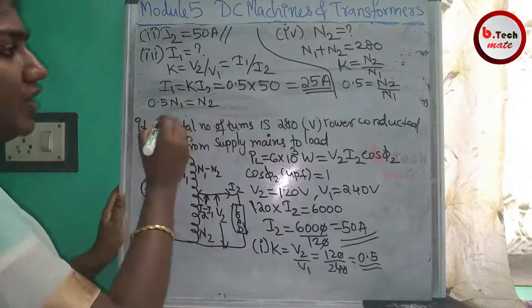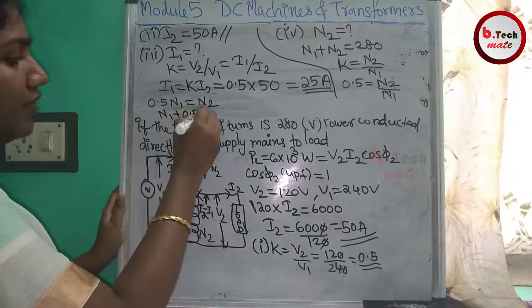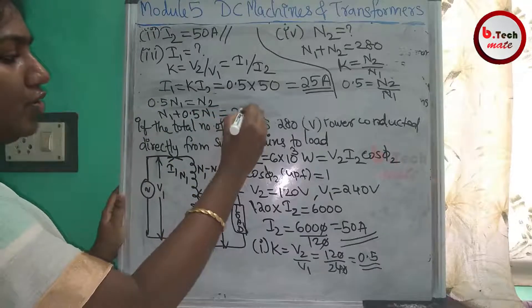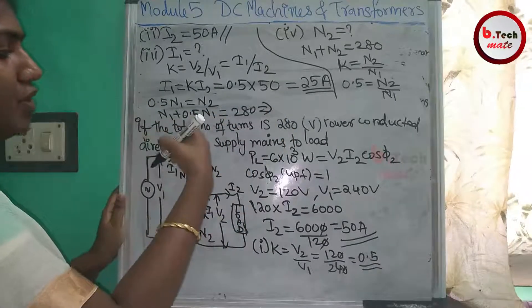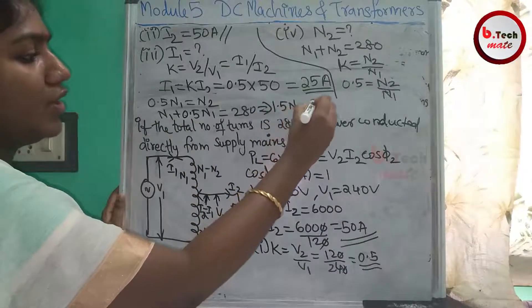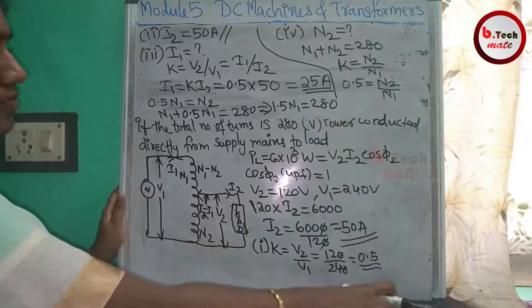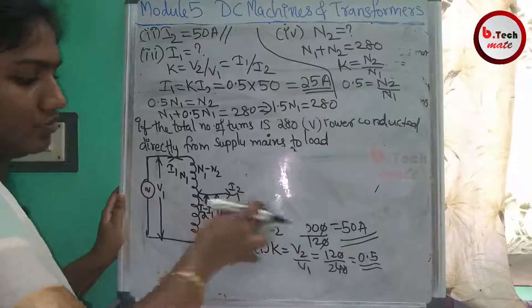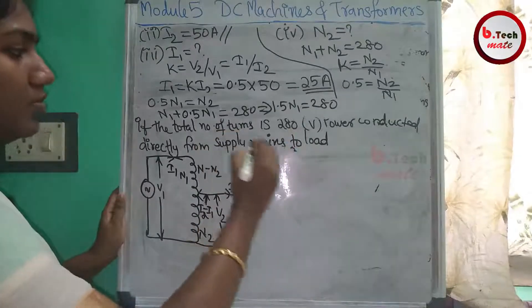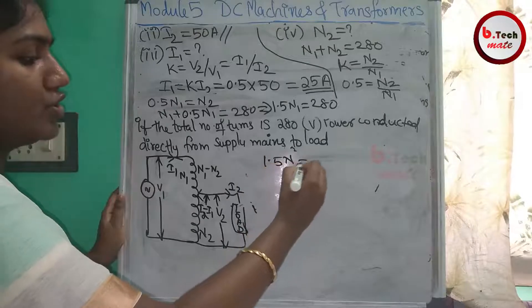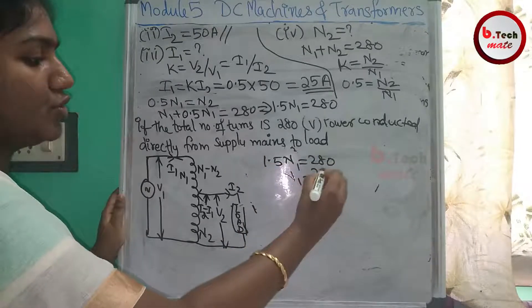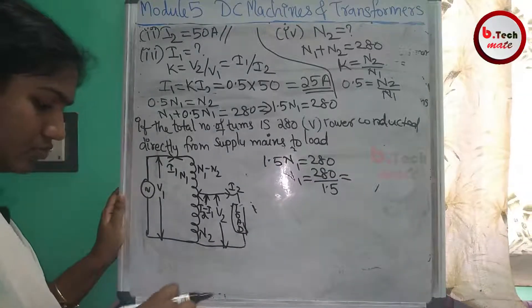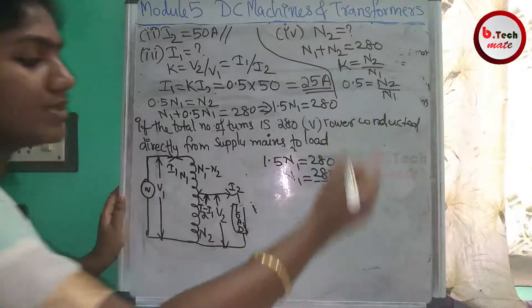N2 is equal to 0.5 × N1. Substituting: N1 + 0.5×N1 = 280, so 1.5×N1 = 280, giving N1 = 280 divided by 1.5, which equals 186.66.